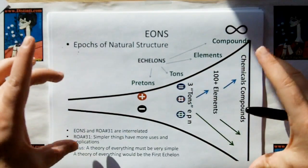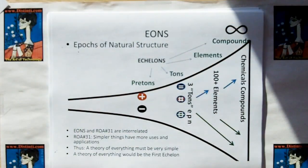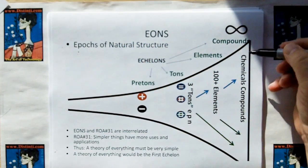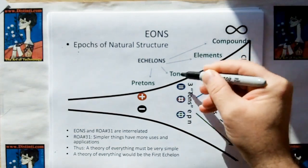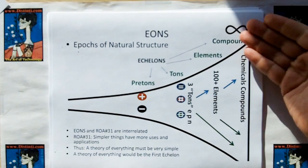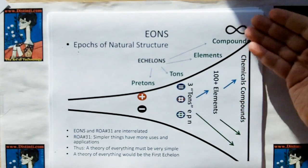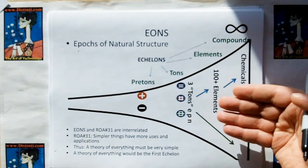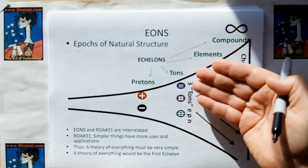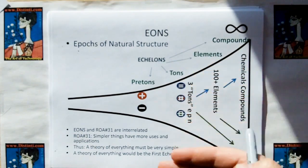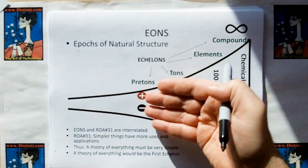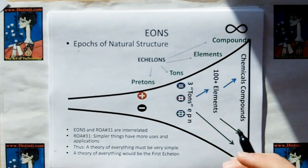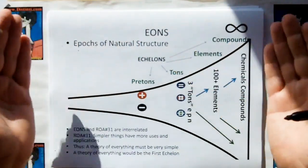This is my diagram, my way of looking at nature. It's called the Epochs of Natural Structure. And what you have here is like a cornucopia, where each level is called an echelon, and where chemical compounds, where they're virtually infinite chemical compounds, are synthesized by 100 or less elements. 100 or less elements are synthesized by three tons, which is my symbols for the electron, the proton, and the neutron. And tons are synthesized by two pretons, which are inertialess charged particles.